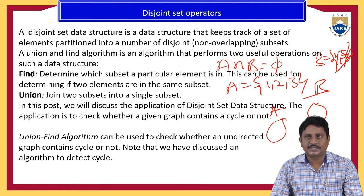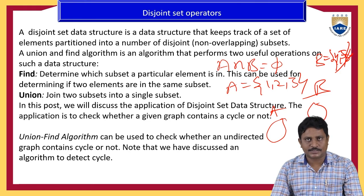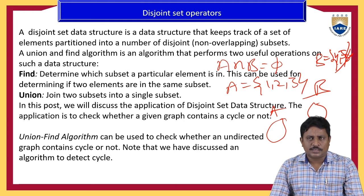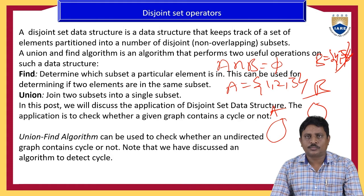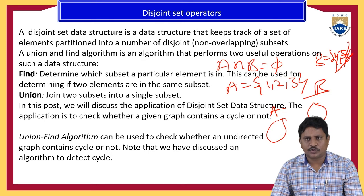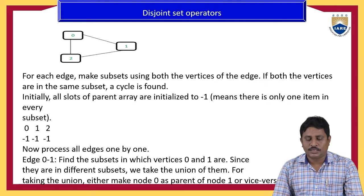A disjoint data structure is a data structure that keeps track of a set of elements partitioned into a number of disjoint subsets. The union and find algorithms are mainly used to combine two or more sets. The find algorithm is used to find the element in the subset.